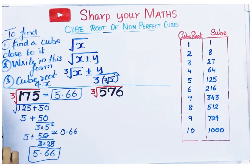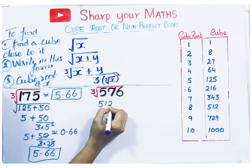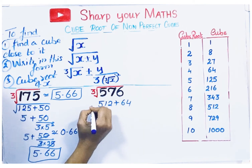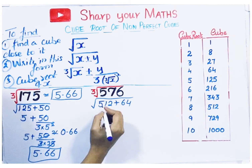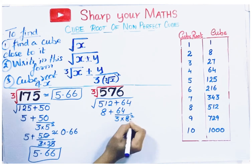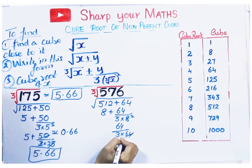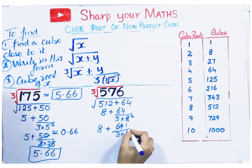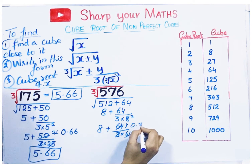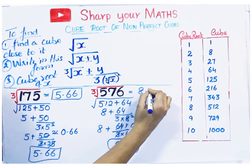Cube root of 576: 576 is close to the cube 512. Write it as 512 plus 64. The cube root of 512 is 8. So the cube root of 576 is approximately 8 plus 64 divided by (3 times 8 squared), which is 8 plus 64 divided by 192. Cancel to get 1 divided by 3, which is 0.33. So 8 plus 0.33 is 8.33 — the cube root of 576 is approximately 8.33.